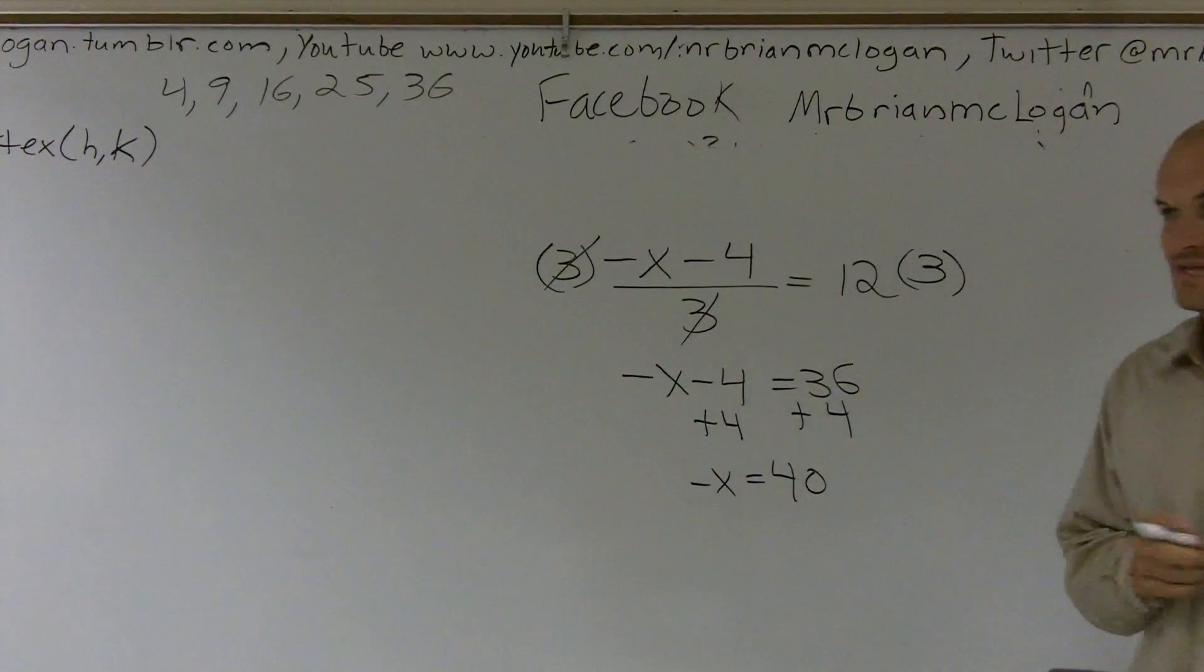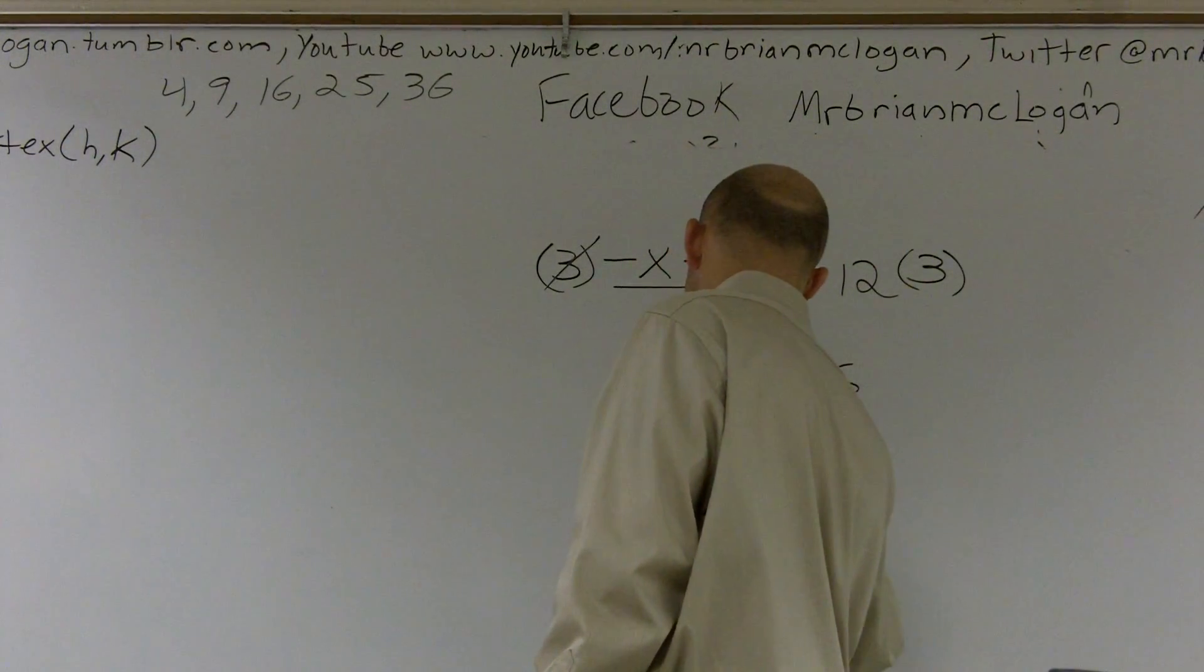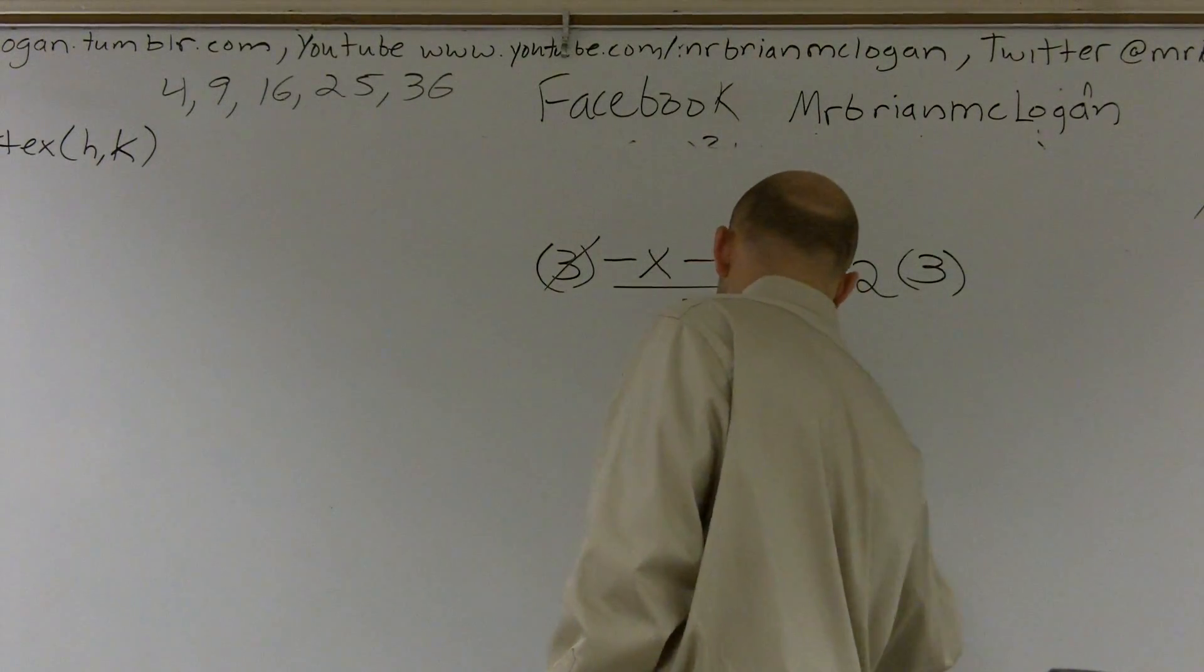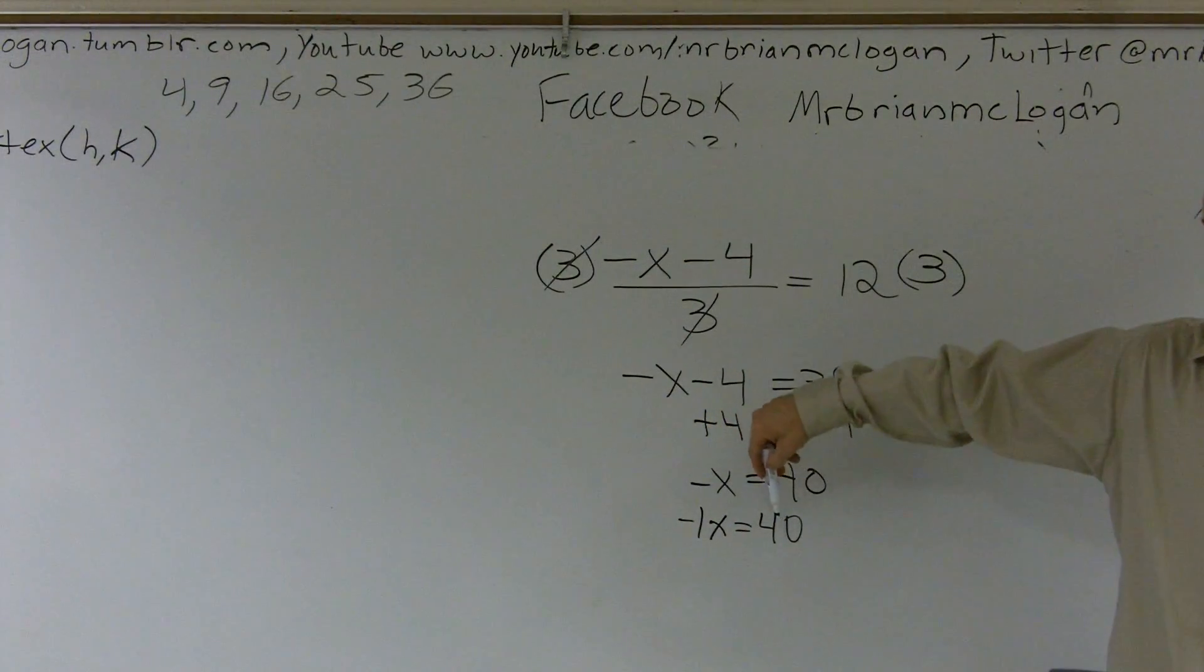So how do I get rid of this negative 1? Well, this negative 1, guys, is the same thing as saying this. So we have negative 1 times x equals 40. So really what's happening is this x is being multiplied by a negative 1.